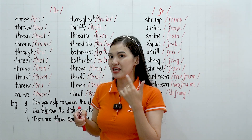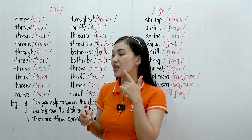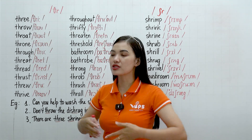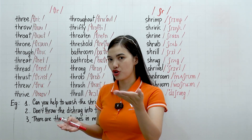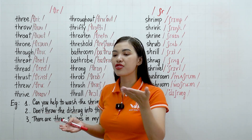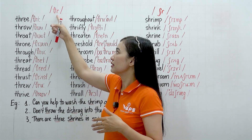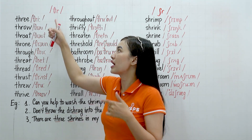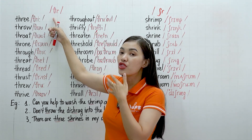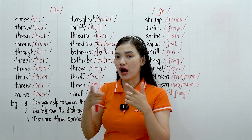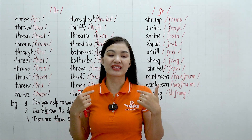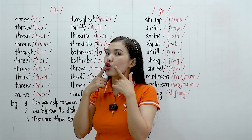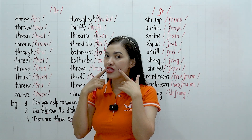For the THR, remember tongue between your teeth, like this. Just relax. THR, THR, THR. And now remember this one — R, R, R. So we have THR, THR. Remember, put your tongue between your teeth like this, and then remember your lips. R, R. THR, THR.